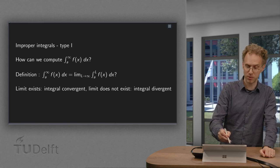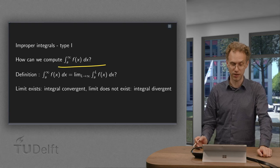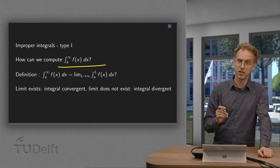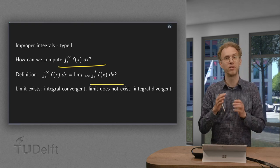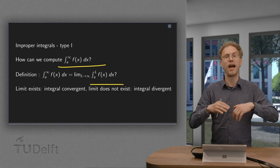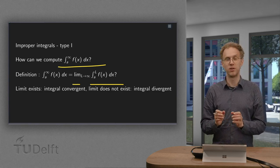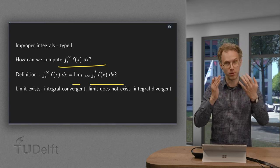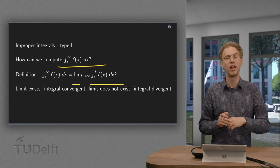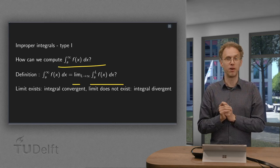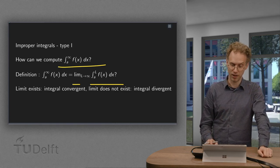So how can we compute the integral from a to infinity, if one of the boundaries is infinite? The definition goes as follows: you first integrate from a to l, where l is a fixed number, and then afterwards you take the limit as l goes to infinity. So you have to take two steps: first you compute your definite integral as you know how to do, and l will appear there in the boundary, and afterwards you take l to infinity.